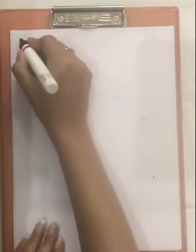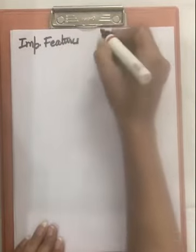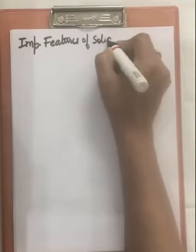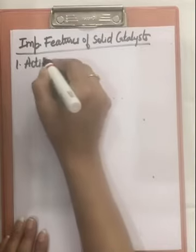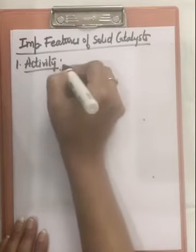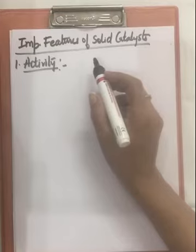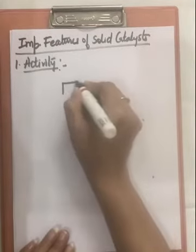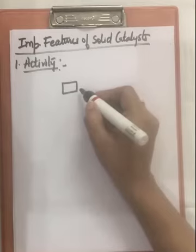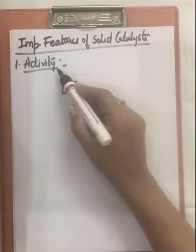Our next topic is important features of solid catalysts. The first feature is activity. The ability of a catalyst to increase the rate of reaction is called the activity of a catalyst — that is, when added in a reaction mixture, its ability to increase the speed of that reaction.